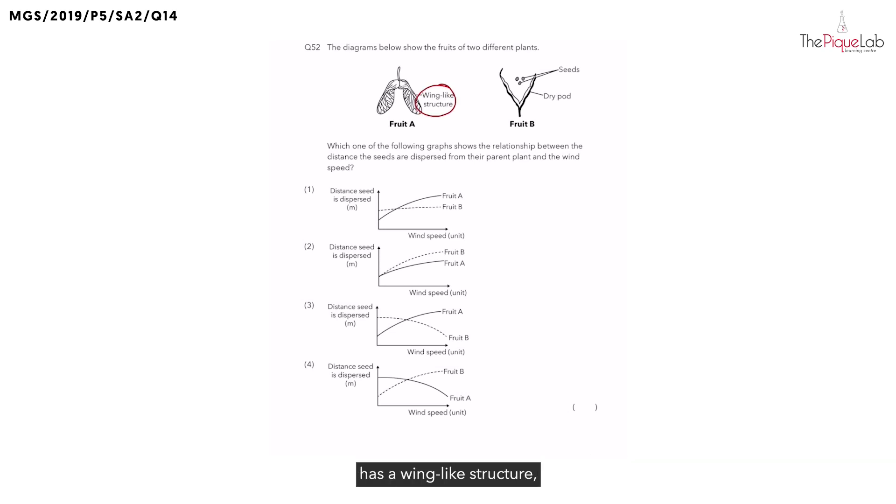So the moment you see A, this fruit has a wing-like structure, means it is most likely to be dispersed by wind. Let's write that down.